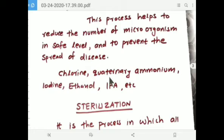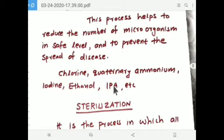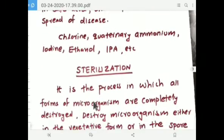The main sanitizers include chlorine at a required concentration, quaternary ammonium, iodine, and ethanol. IPA — that is isopropyl alcohol — is generally a disinfectant, but it is one of the ingredients used in the preparation of sanitizers.